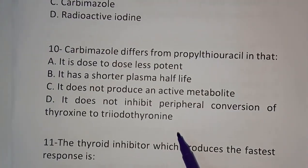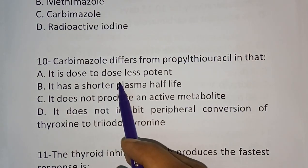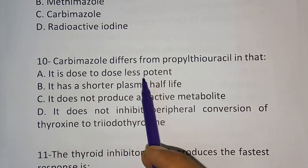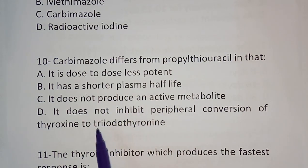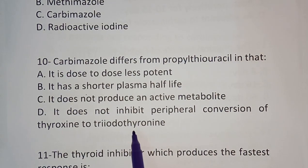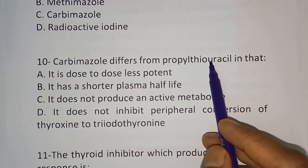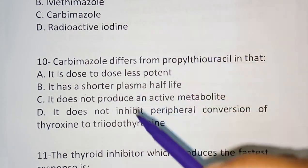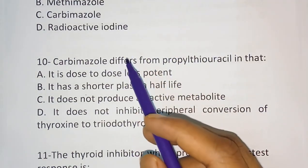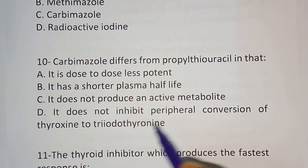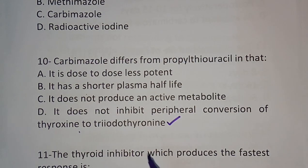Question number ten: Carbimazole differs from propylthiouracil in that — option A: it is dose-for-dose less potent; option B: it has a shorter plasma half-life; option C: it does not produce an active metabolite; option D: it does not inhibit peripheral conversion of thyroxine to triiodothyronine. Propylthiouracil inhibits peripheral conversion of thyroxine to triiodothyronine, while carbimazole inhibits oxidation of iodide. So the correct answer is option D — carbimazole does not inhibit peripheral conversion of thyroxine to triiodothyronine.